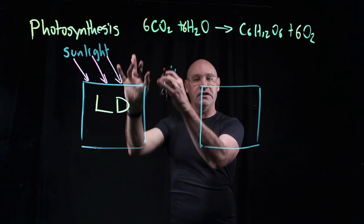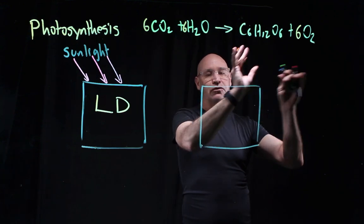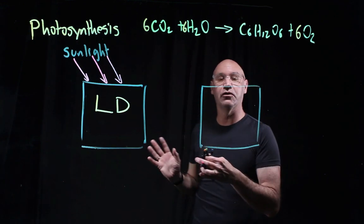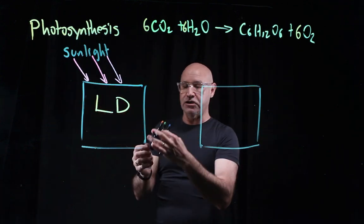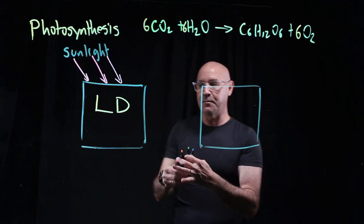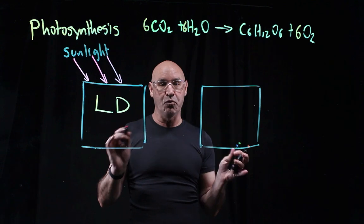So inputs are carbon dioxide and water, outputs are glucose and oxygen. Let's have a look at where they go in and out. The light dependent reaction - the whole point of the light dependent reaction is to split water.